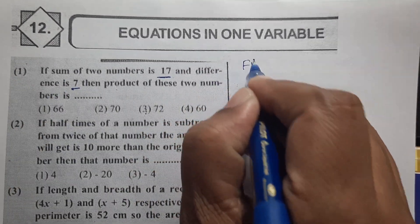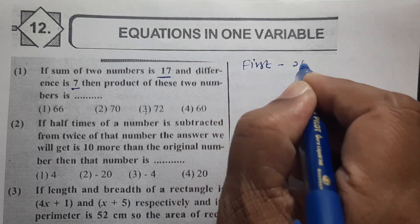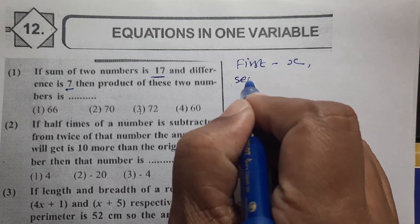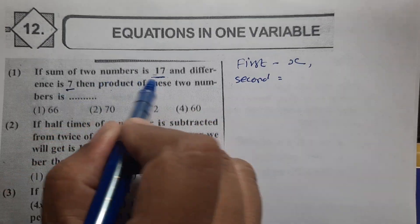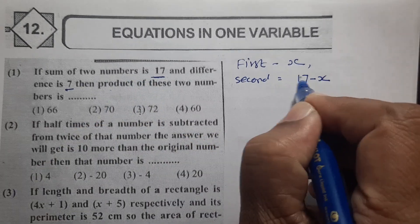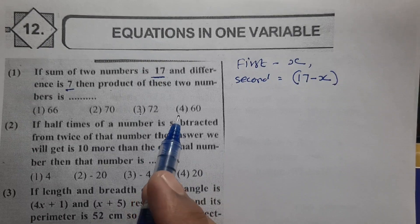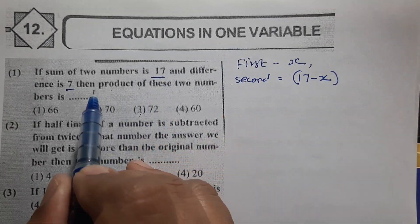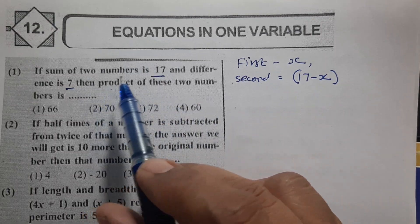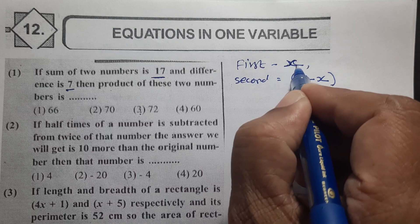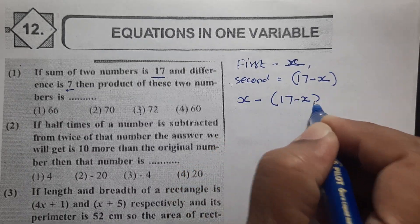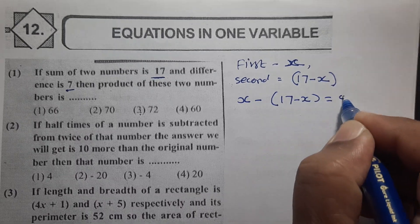Let the first number be x. Then the second number is 17 minus x. The difference of the two numbers equals 7, so: x minus (17 minus x) equals 7.